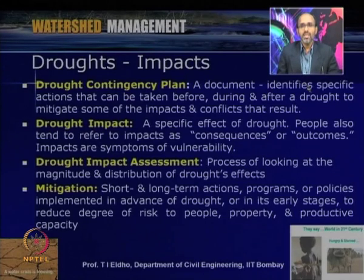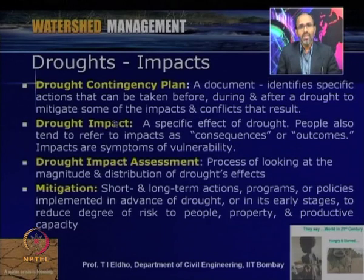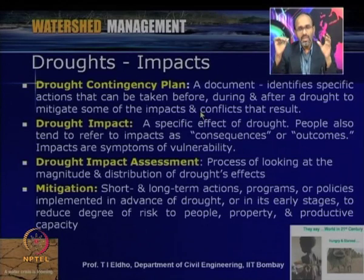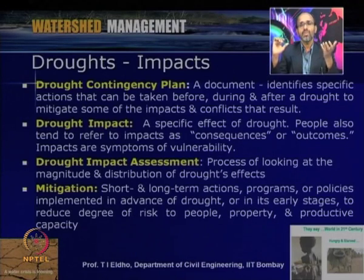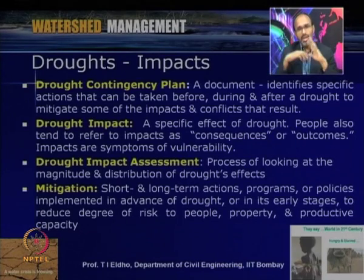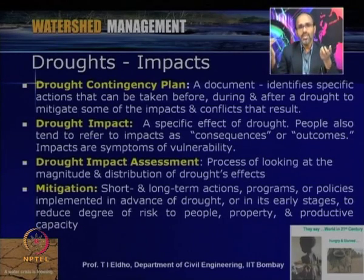A drought contingency plan is a document that identifies specific actions that can be taken before droughts, during droughts, and after a drought to mitigate some of the impacts and conflicts that result. We should prepare contingency plans to deal with the situation before drought occurs, during the drought, and after the drought — including what measures to take to regenerate the system back.